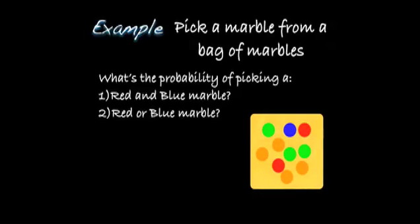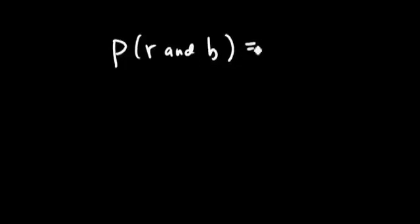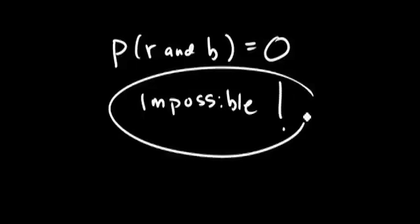This is used to answer probability questions that involve the word 'or'. For example, if you pick a marble from a bag of marbles, what's the probability of picking: question 1, a red and blue marble? Question 2, a red or blue marble? The probability of selecting a marble that is both red and blue at the same time is 0. That means that the event of picking a red and blue marble is impossible — there are no marbles in the bag that are both red and blue at the same time.